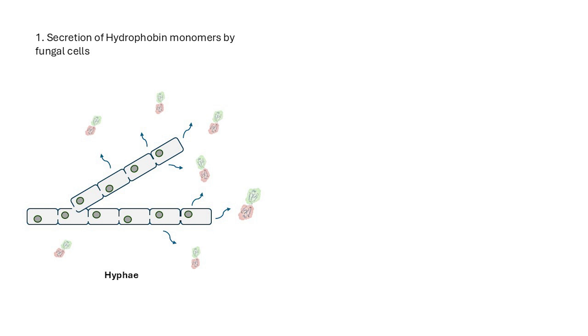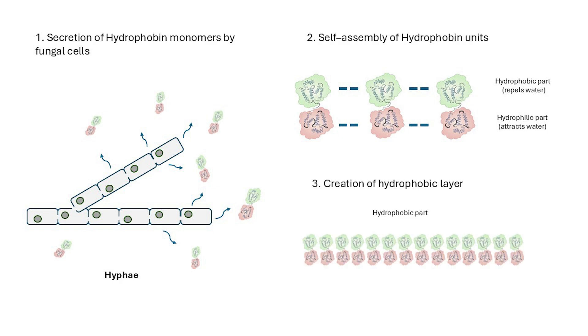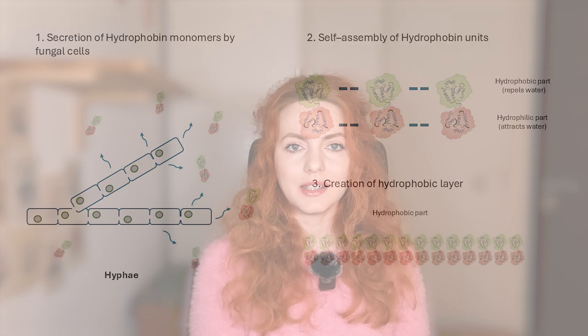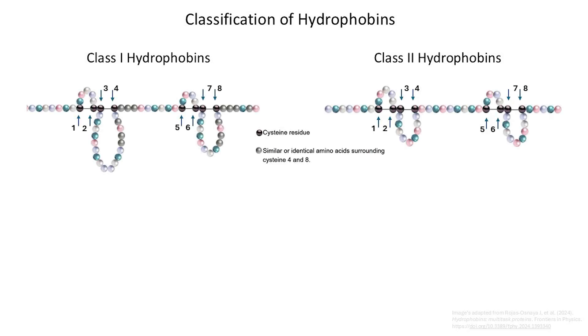Fungal cells secrete hydrophobins as individual units — monomers — which then self-assemble into a hydrophobic film, significantly lowering water's surface tension. The hydrophobin protein family consists of more than 1,000 identified members across diverse fungal species. Hydrophobins are classified into two main groups, class 1 and class 2. While both classes share the characteristic 8-cysteine pattern that forms four disulfide bonds, they differ in their biophysical properties and self-assembly behavior.